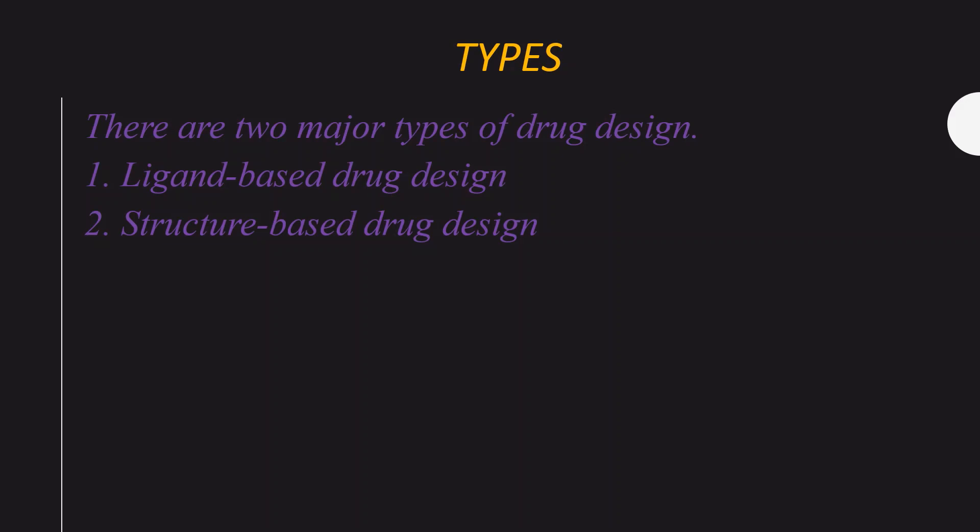Here we discuss the types of drug design: ligand-based drug design and structure-based drug design. In structure-based drug design, we know the 3D structure of all the targets. In ligand-based drug design, the drug is designed on the basis of ligand knowledge. So we have these two main types of drug design.